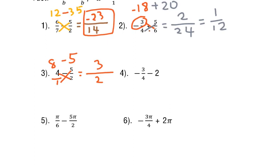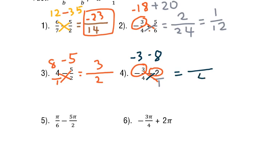Number four: a whole number can be written over 1. We have negative 3 over 1 and negative 2. Cross multiply: negative 3 times 1 gives negative 3, and then cross multiply to get negative 8. The denominator is 4 times 1, which is 4. Negative 3 minus 8 is negative 11, so the answer is negative 11 over 4.